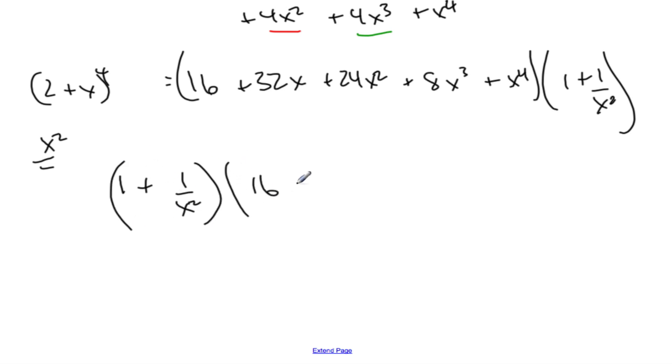If I'm going to do the multiplication, I'm going to take 1 times 16 and 1 times 32x and 1 times 24x^2 and 1 times the other values. And so when I do 1 times 24x^2, that will be an x^2 term.